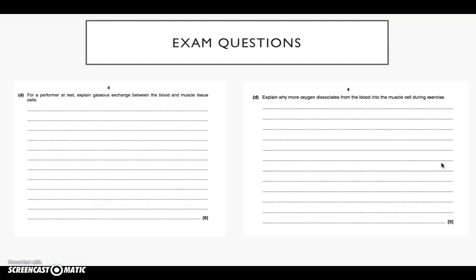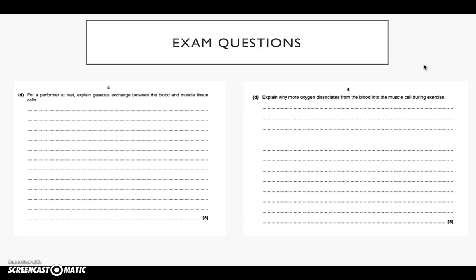Just to give you an insight into the type of question you may actually be asked in the exam: for a performer at rest, explain gaseous exchange between the blood and muscle tissue cells — that's what we're going through with this screencast. Tomorrow we're also going to look at during exercise in some detail. The second question: explain why more oxygen dissociates from the blood into the muscle cells during exercise. Hopefully as of next week you'll know these questions and be able to answer them using the memory methods.